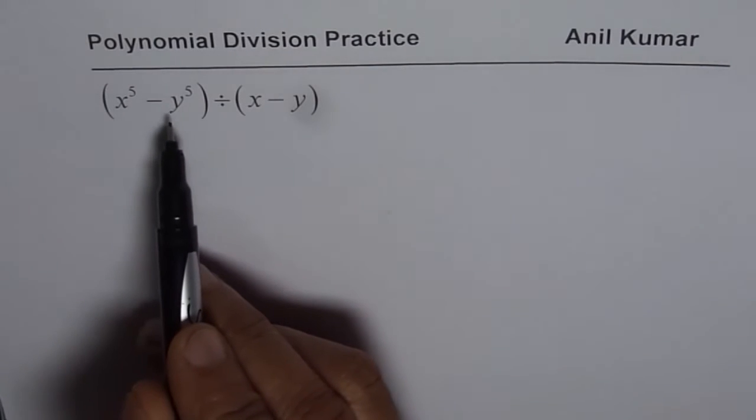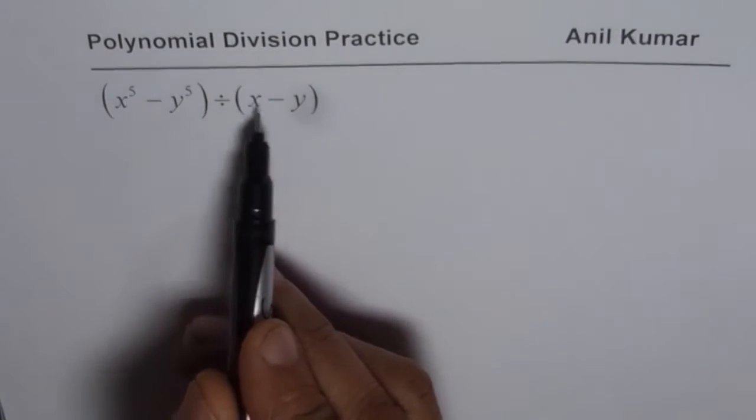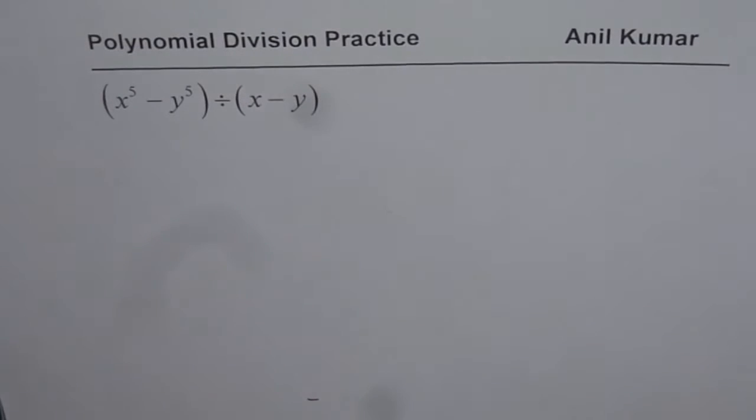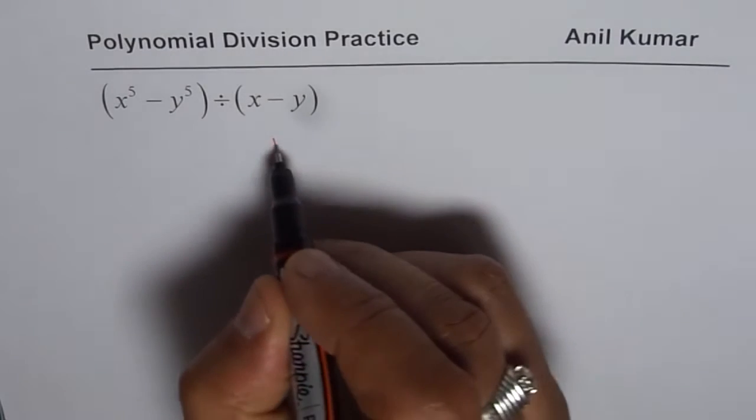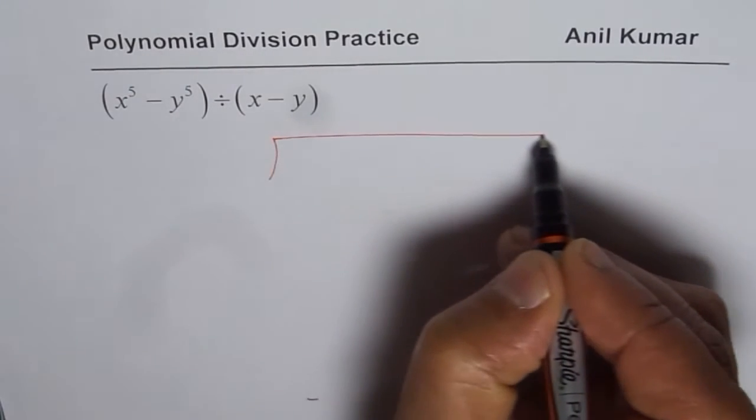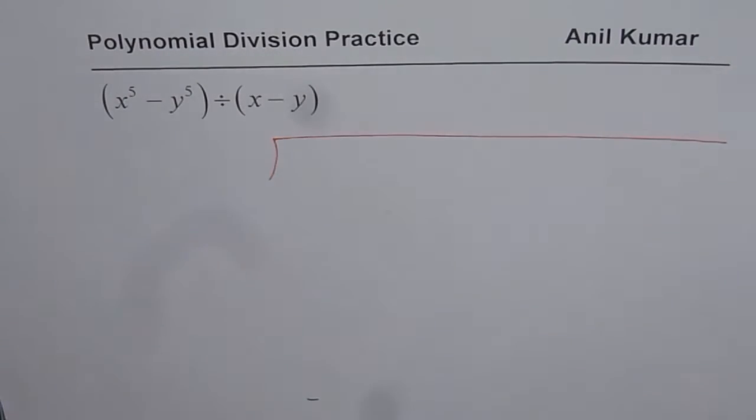The question is x to the power of 5 minus y to the power of 5 divided by x minus y. You will see this kind of question in your test paper for sure. Now let's see how to do such a division.